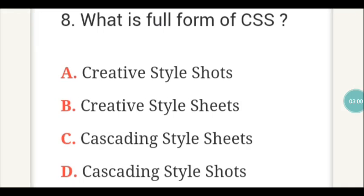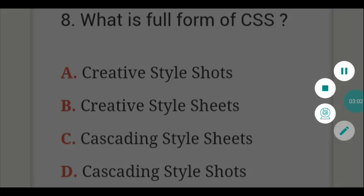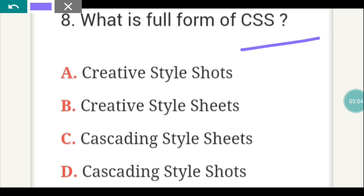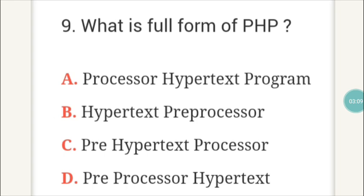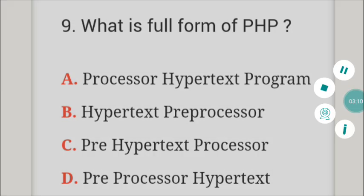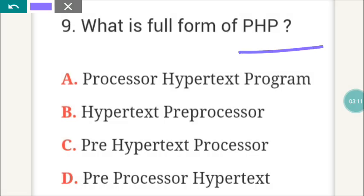The next question: what is the full form of CSS? The answer is C. The next question: what is the full form of PHP? PHP's full form, answer is B — Hypertext Pre-processor.